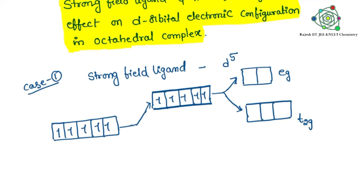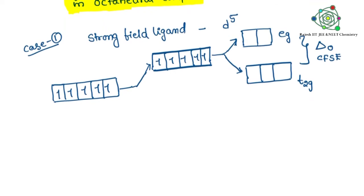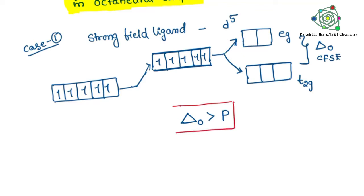In the octahedral complex with a strong field ligand, the delta-O — that means the crystal field splitting energy — is higher. So the gap between Eg and T2g is larger. We need to follow one rule: whenever you use a strong field ligand, delta-O (octahedral) is greater than P, where P is the pairing energy. So pairing energy is lesser and the gap between Eg and T2g is higher.